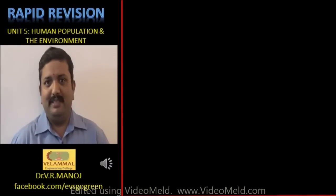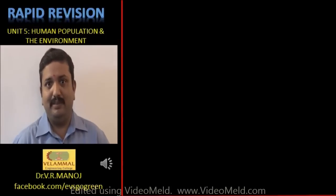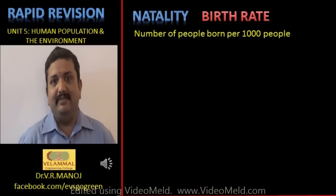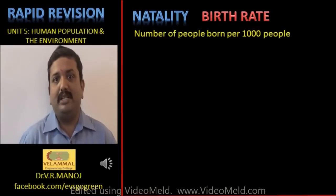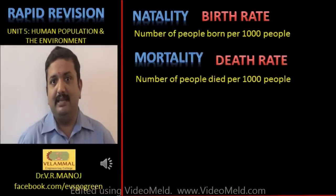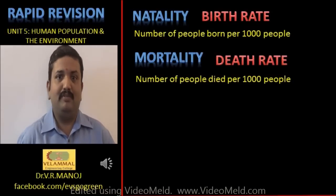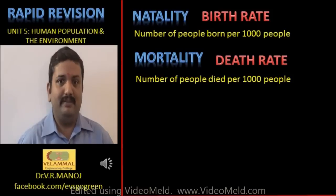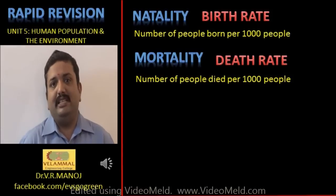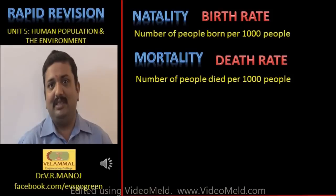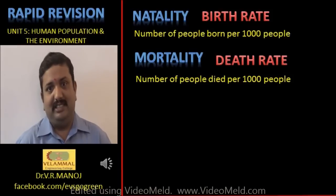Under human population and environment, there are several important definitions to remember. The first term is birth rate or natality, which is the number of live births per thousand people. Then you have mortality, which is the death rate — the number of people dying per thousand people living.